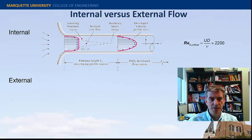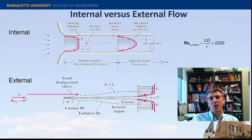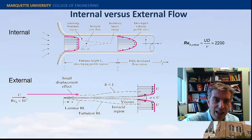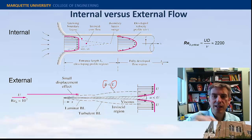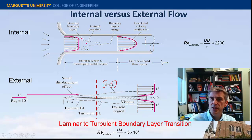The transition in a pipe occurs around Reynolds number 2200. For external flow on a flat plate, the boundary layer is free to grow indefinitely and continues to grow. We're showing a laminar boundary layer growing, then naturally transitioning to a turbulent boundary layer, which gets quite large quite quickly. The inviscid region is outside the boundary layer, and we typically think of this boundary layer height delta as much, much smaller than the characteristic length of the plate.